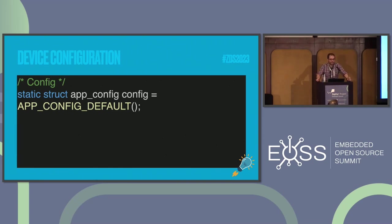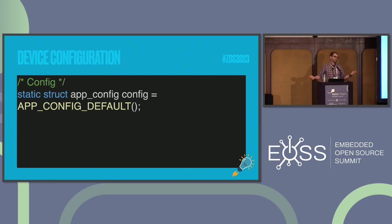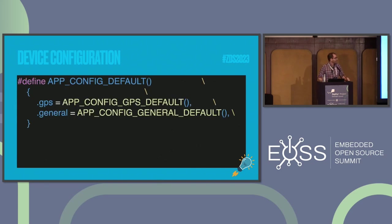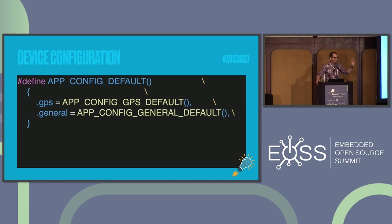One cool thing I typically do is set up a configuration struct with a default macro. The macro basically says: here are the settings that are ideal for this device. No matter what happens to the configuration that's read in, it'll at least set those defaults. If the device boots and you try to read that configuration and it's invalid or not even there, at least you have something. If it's complicated, you can layer these structures and set these macros in a staggered format — maybe a struct for GPS, or a struct for general connection information — which makes it a bit more clean.